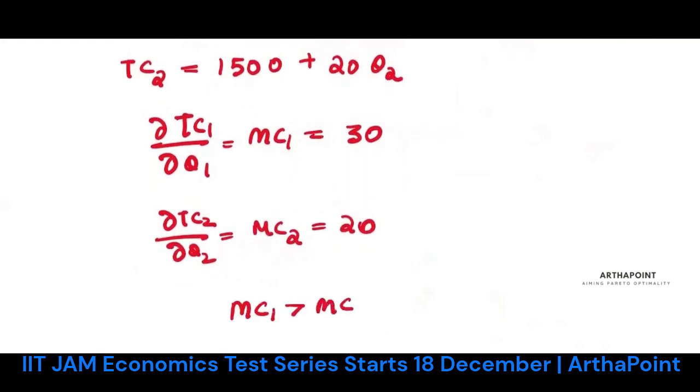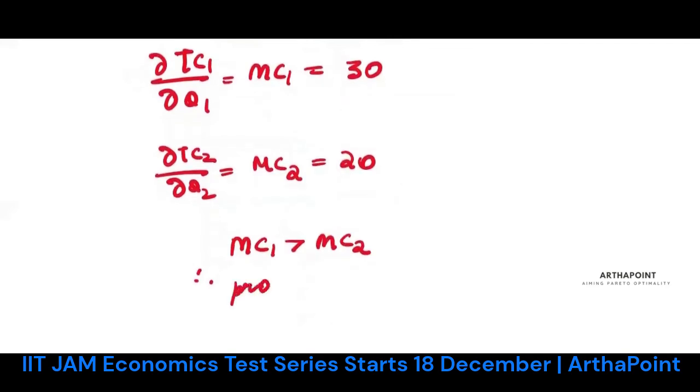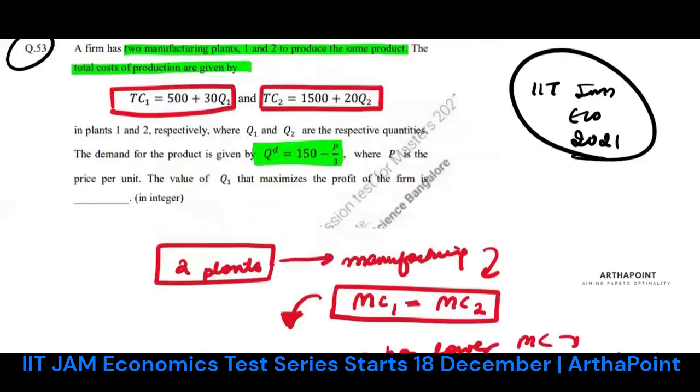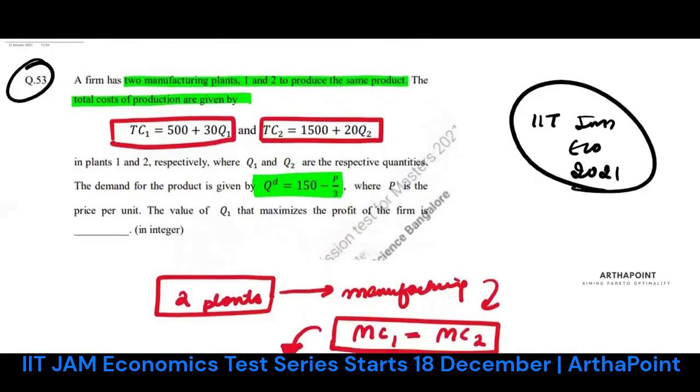Since marginal cost of plant 1 is greater than marginal cost of plant 2, therefore you will produce only using plant 2. The quantity produced using plant 1 would simply be zero. So the answer to this question is zero.